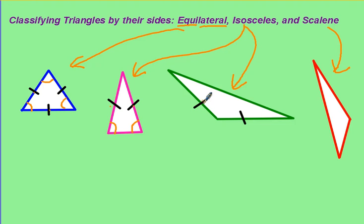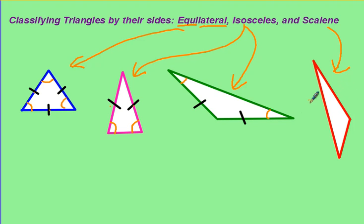Here's another isosceles. If these two sides are congruent, then we know their opposite angles are also congruent. We also know that in a scalene triangle, no sides match, which means none of the angles will match.